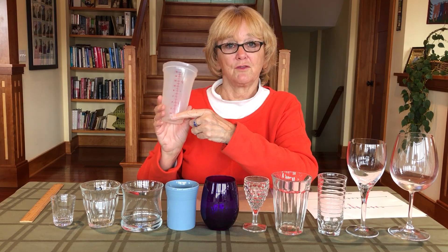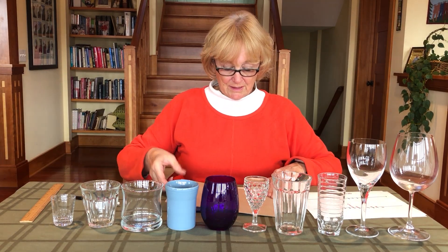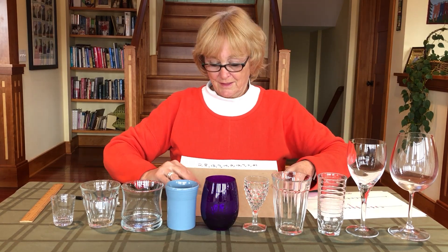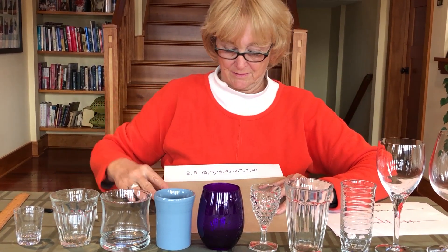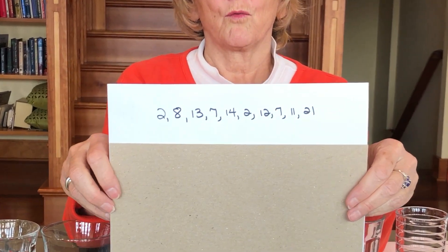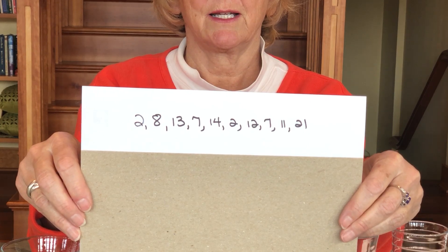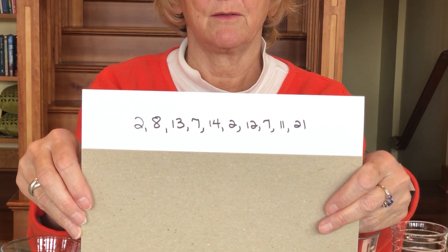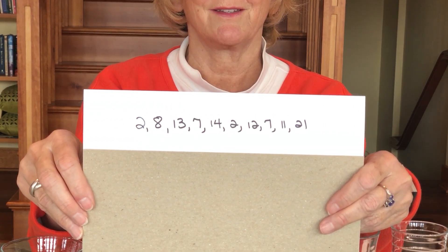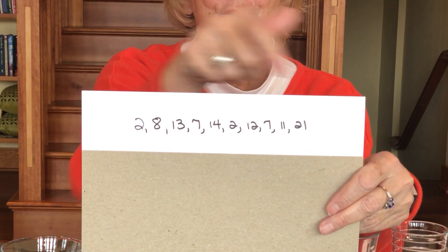I did do some measurement: I filled each glass with water and used a measuring device — on one side fluid ounces and on the other milliliters. I measured in fluid ounces and recorded the data in the order in which the glasses were measured, from the first glass to the last. This is the raw data for those ten glasses — and you can see they're no longer in order.